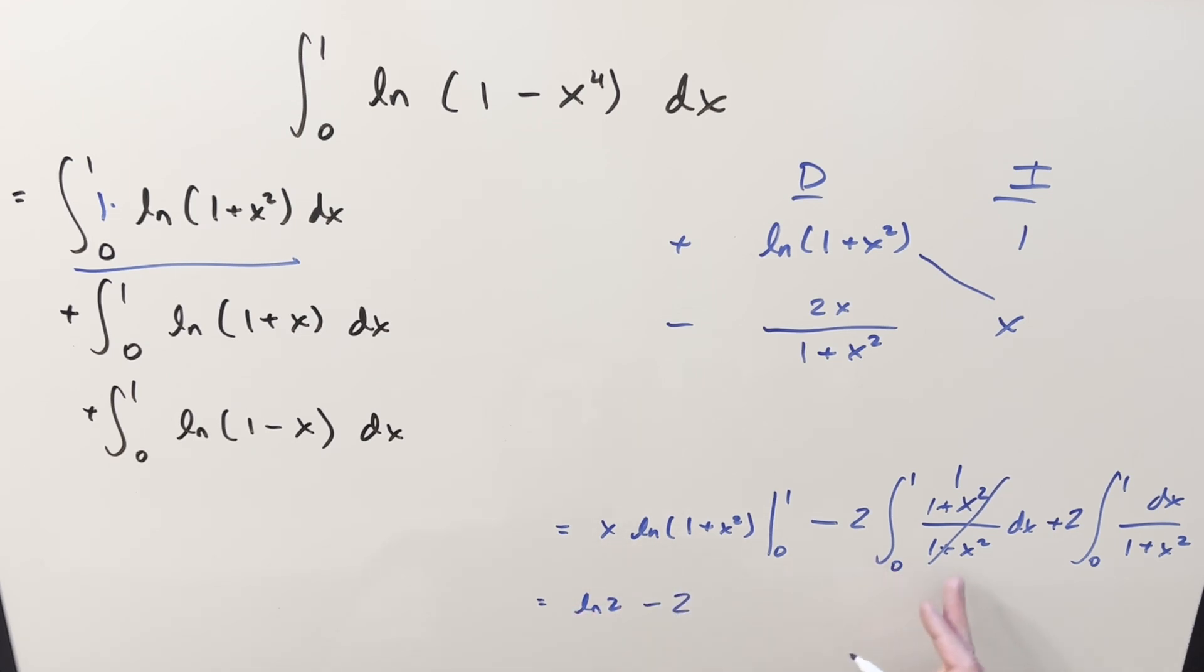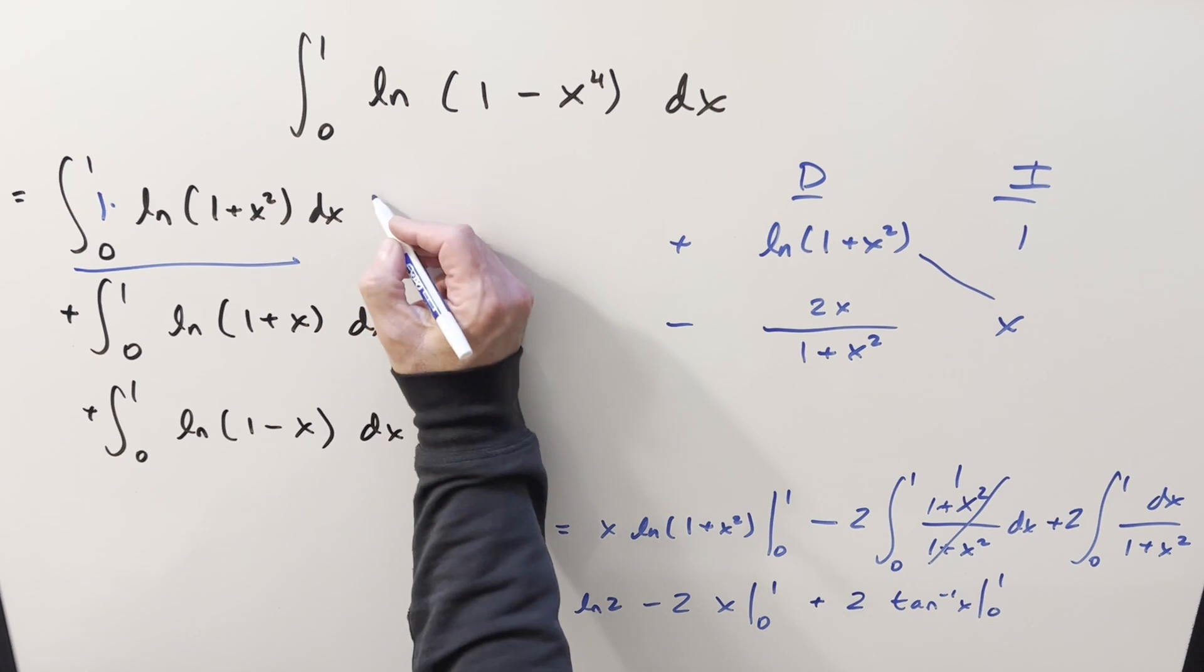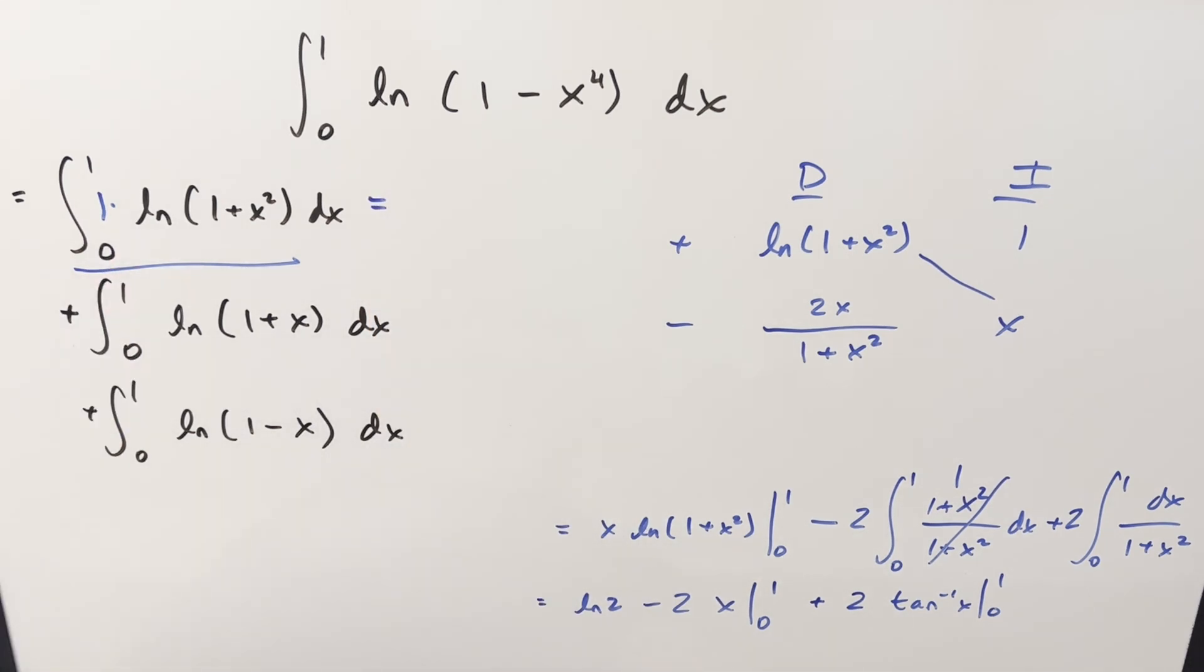Then here minus two, integral of one is going to be just x evaluated from zero to one. And then here, this is just our arctan integral, so we're going to have two times arctan of x evaluated from zero to one. And then let's just plug in and put everything up here with our part of our integral here.